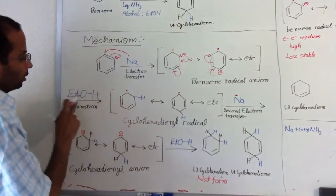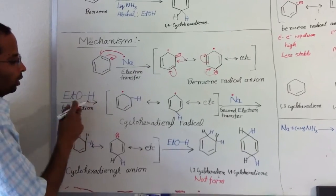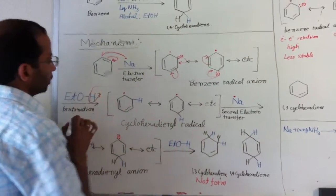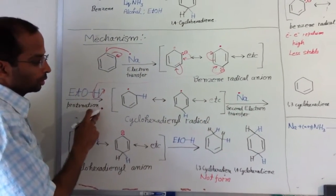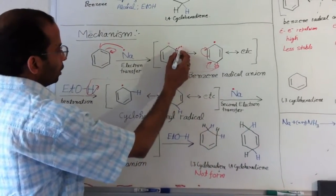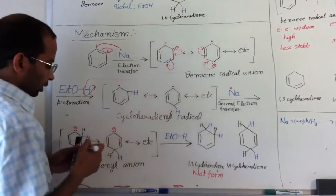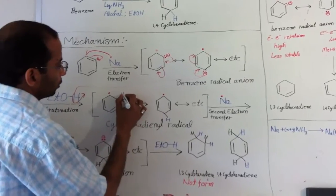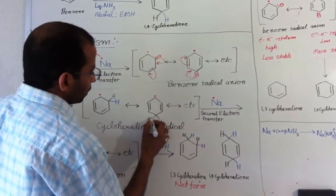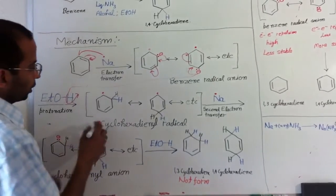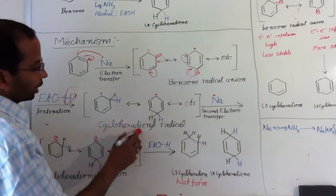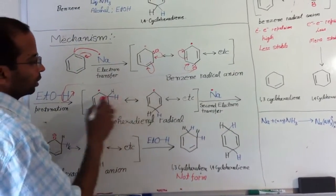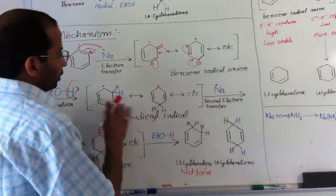When they react with ethanol, this electron absorbs a proton from the ethanol in a protonation reaction. You can see if we use this electron, it will form hydrogen from here. Let's add benzene's original hydrogen, which is in black color in both places. Now you can see this benzene radical anion is converted into cyclohexadienyl radical.